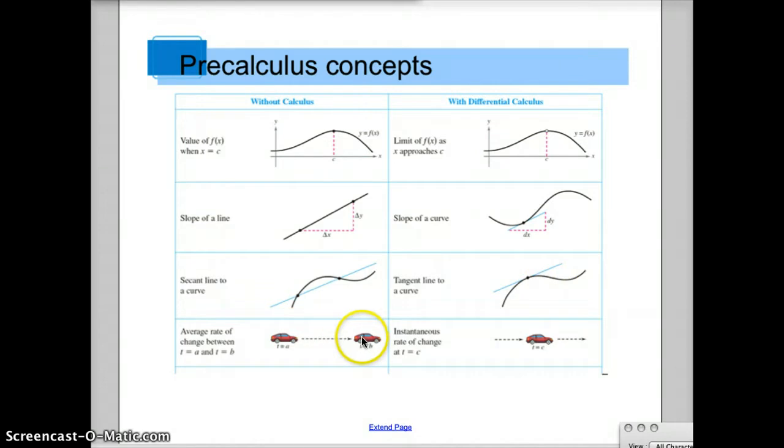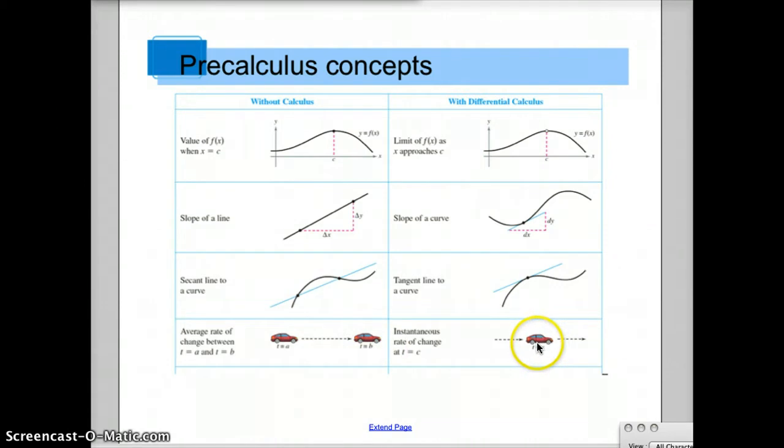We can find the average rate or speed of a car from point A to point B, but if you want to find out instantaneously how fast is the car going right now, you need calculus.